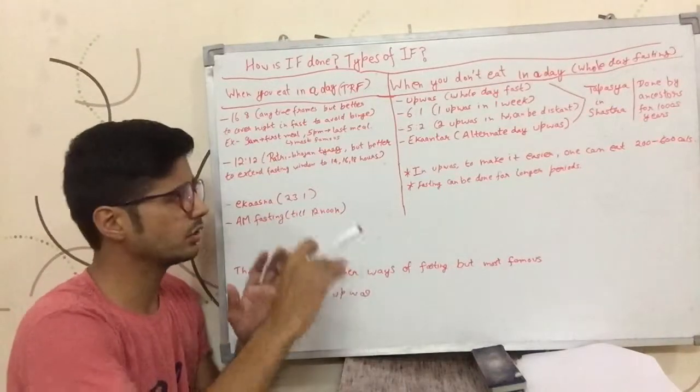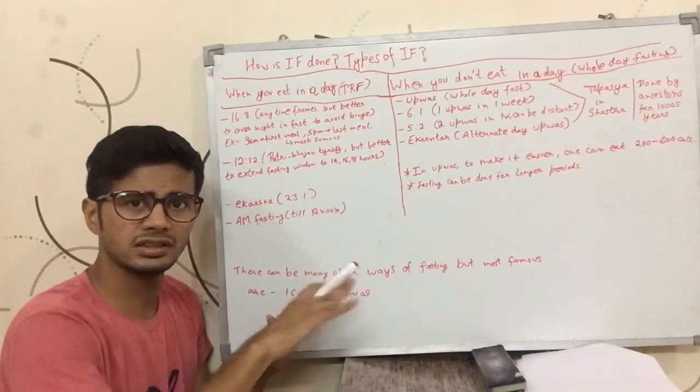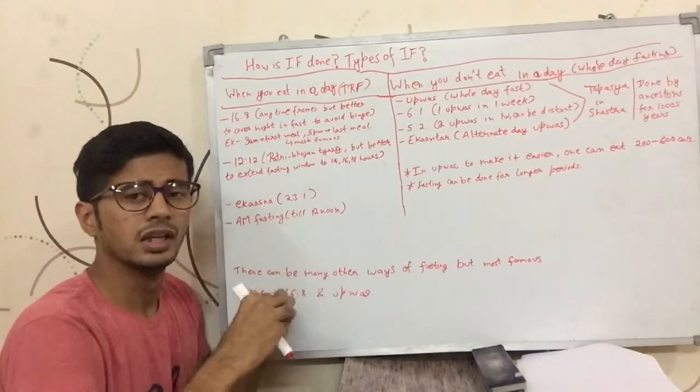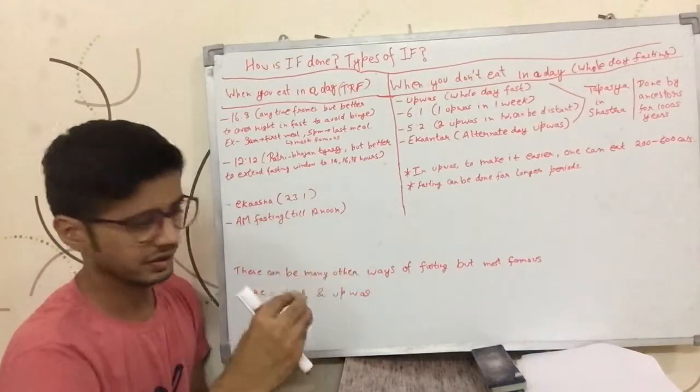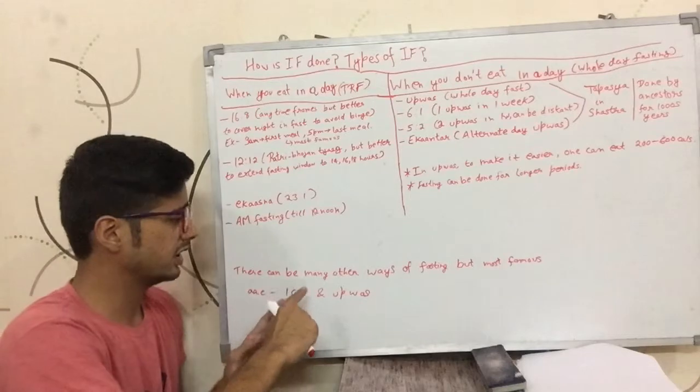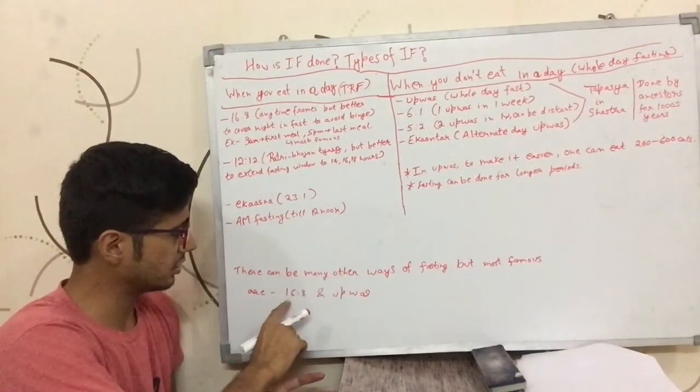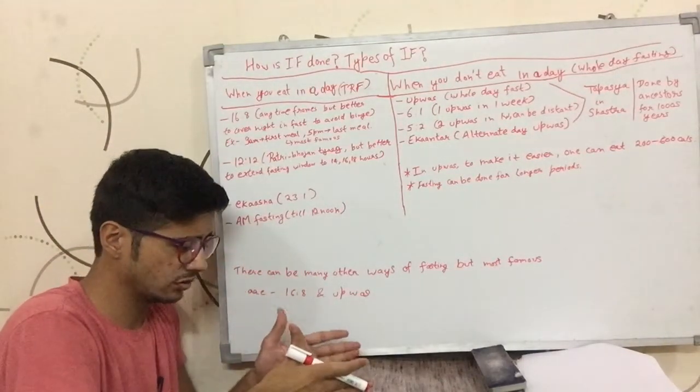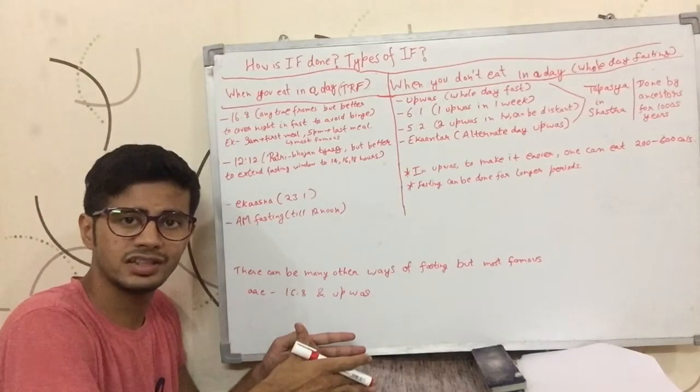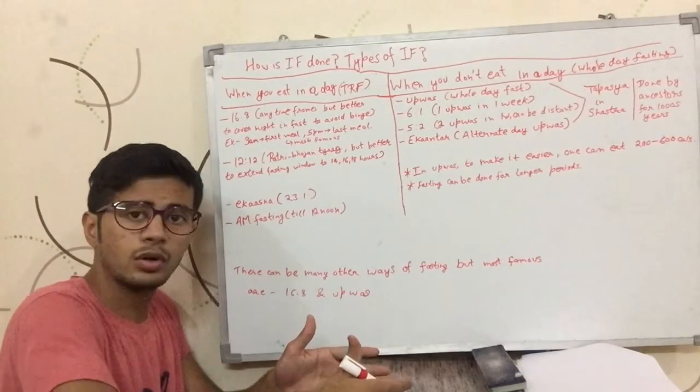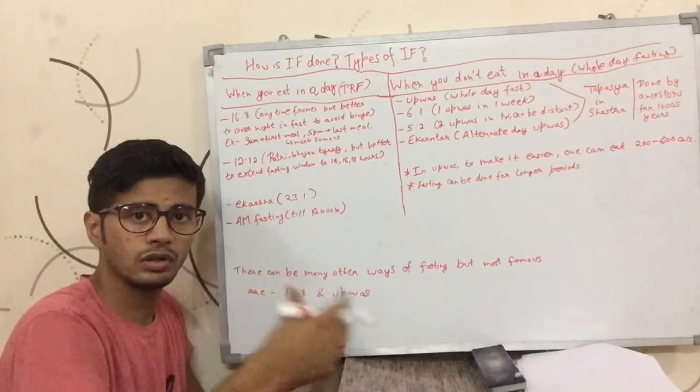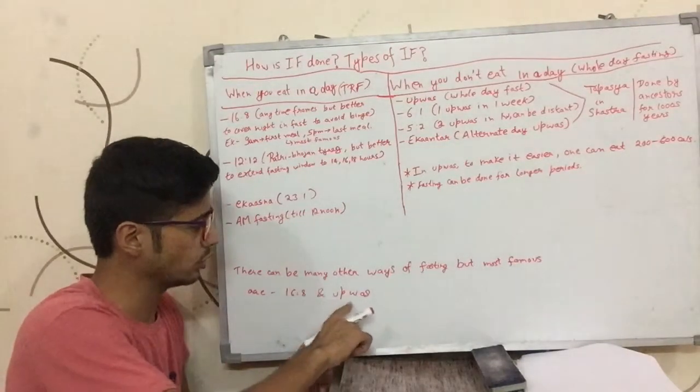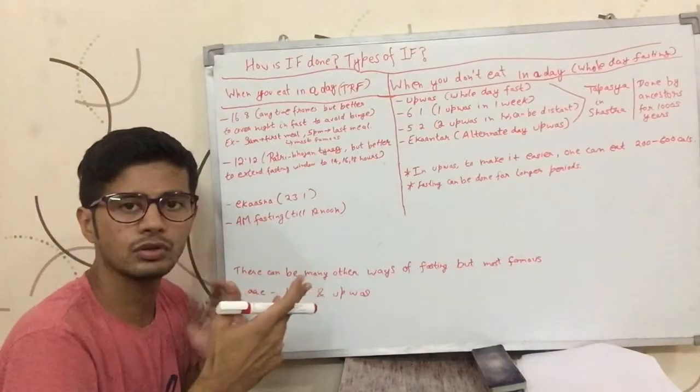But I haven't talked about this in these videos because it's a bodybuilding and fitness channel, and people in bodybuilding and fitness would not want to go for longer periods of fasting. There can be many other ways of fasting, but the most famous are 16:8 when you're eating for your whole day—because it's not too tough to stay hungry for a 16-hour window and it's not too tough to eat all your food in an 8-hour window. So it's one of the most famous methods.